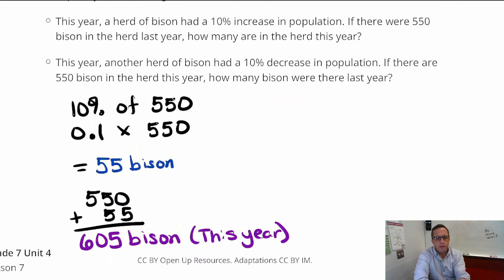So this year, now if we just add that, that's an increase, right? So we're going to do 550 plus 55 bison, and that is going to be 605. That's going to be this year. Alright, now the second statement is tricky. It's really, really, really tricky. So this year, another herd of bison had a 10% decrease of population, and if there's 550 bison in the herd this year, how many bison were there last year?